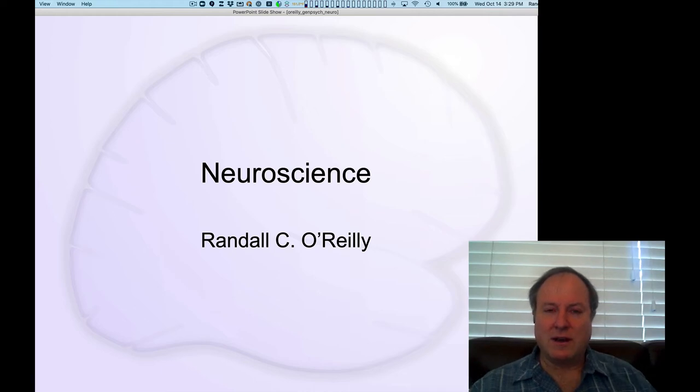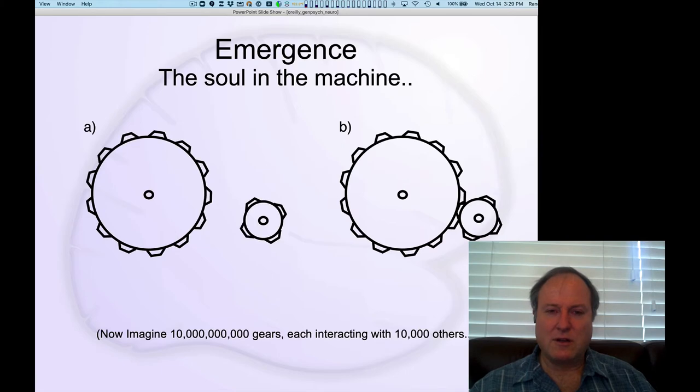Today we're going to talk about neuroscience, everything from neuron all the way up to large-scale brain structure. And the key question here is how can something as simple as a neuron support everything that goes on inside our brain and ultimately everything that happens for us.